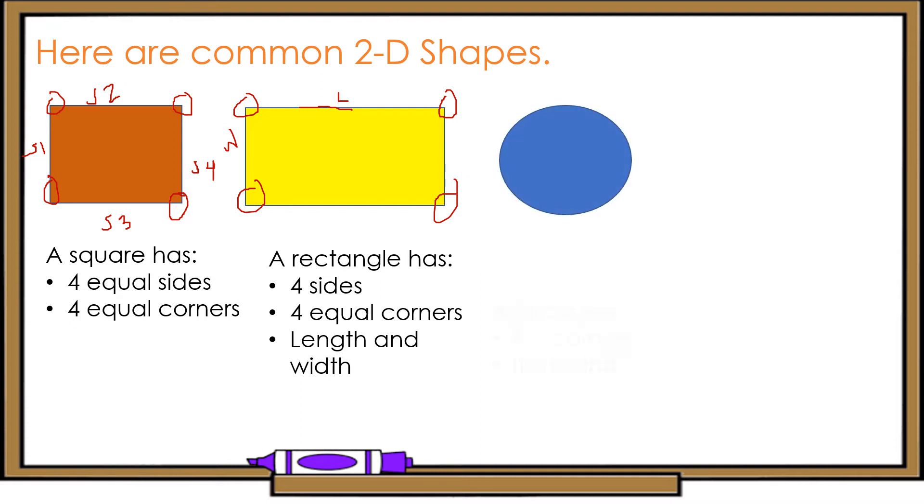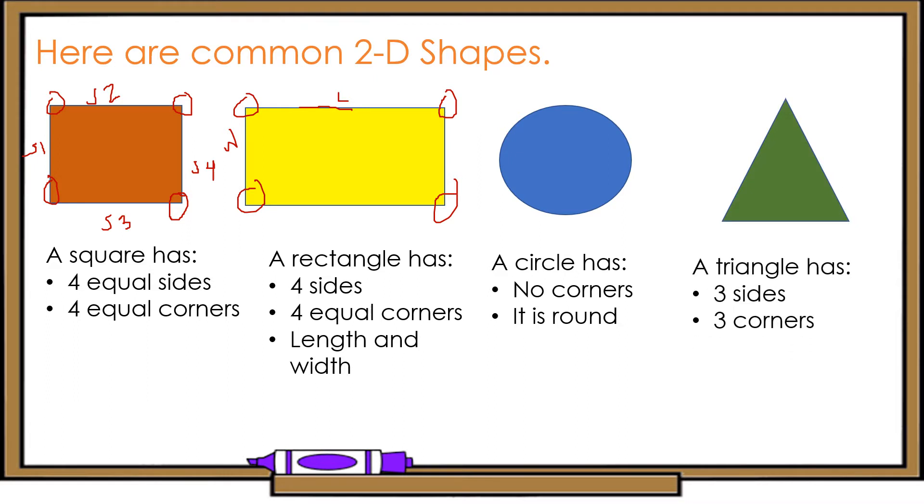And this is a circle. A circle has no corners. It is round. And this is a triangle. A triangle has 3 sides. This is side 1, side 2, and side 3. And it has 3 corners.